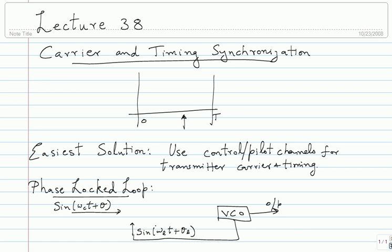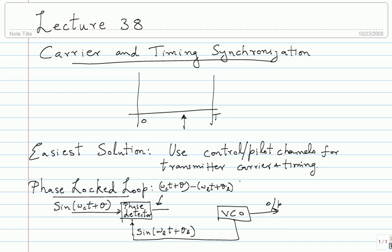You calculate the error — it's like any other feedback loop. The error you're interested in is the phase error, computed by a phase detector. The phase detector's output should roughly be (ωc·t + θ) − (ωL·t + θL), modulo 2π. If there is a mismatch in ωc and ωL, the phase difference will be a linear ramp going up and down modulo 2π. If ωc equals ωL but phases differ, the output is a DC value.